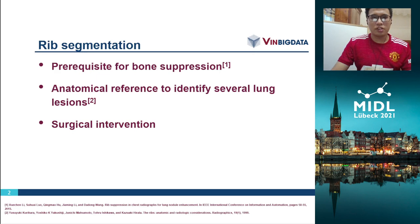RIP substitution is an important prerequisite for bone suppression, which aims to minimize the impact of superimposing structures like the RIPs and clavicles on the lung fields.